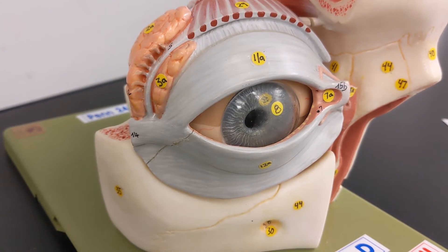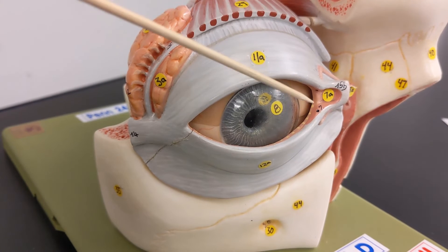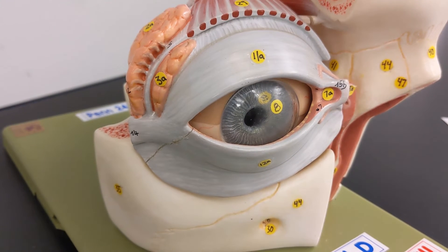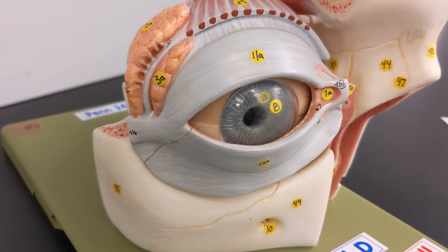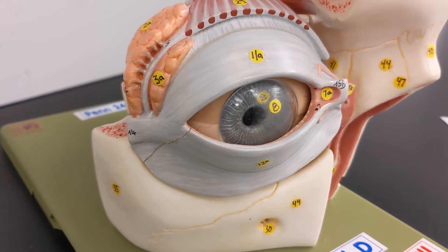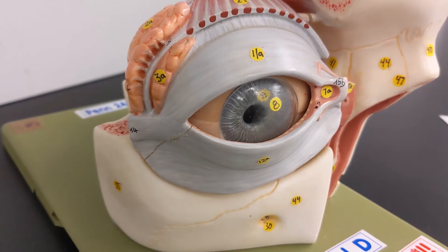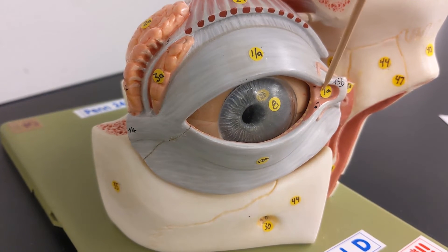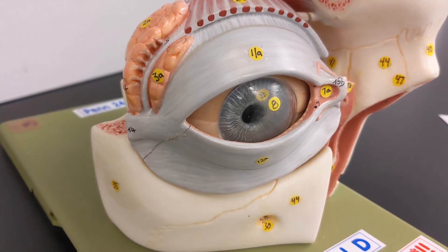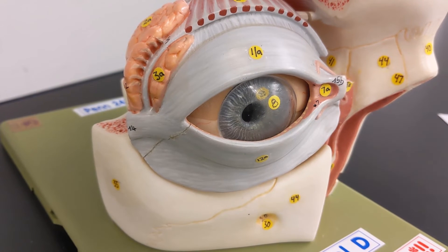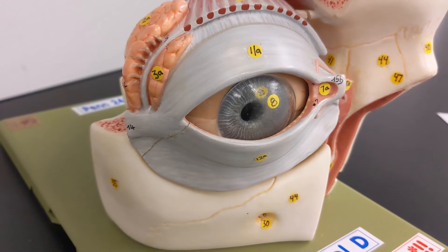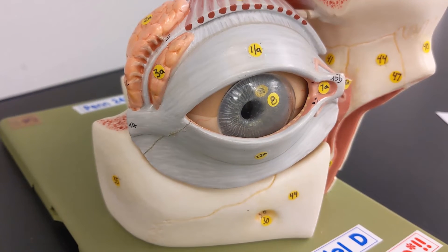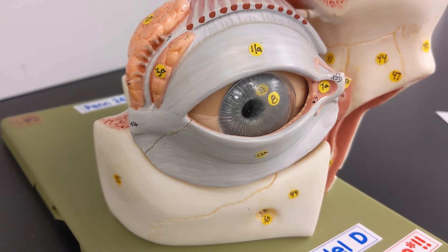This hole here is the lacrimal puncta. So I think at my school, we kind of simplify and we just say that this is the lacrimal puncta, that area. Truly that is the canthus and the holes themselves are the lacrimal puncta. But just go by whatever your professor says. That is the correct answer.